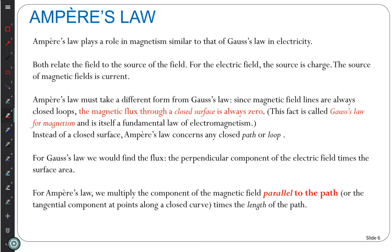You always have equal north and south poles, so any surface you make will always have a net magnetic charge enclosed of zero. If the net magnetic charge enclosed is zero, the magnetic flux is zero. Gauss's law applies to magnetism but is not very useful at this level. For the calculus-based class, it's one of Maxwell's four equations. Ampere's law has to do with the magnetic field, but not the magnetic flux.